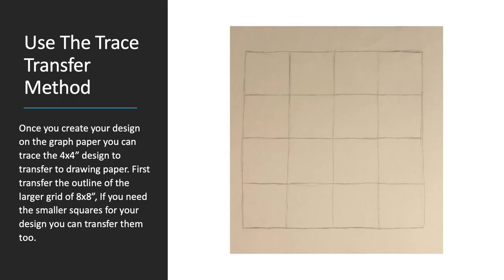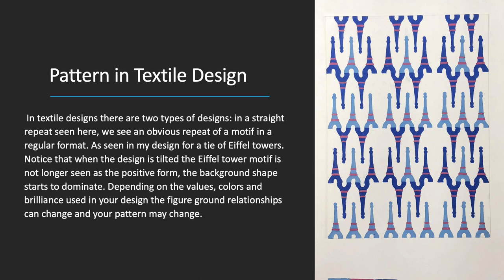Use the trace transfer method. Once you create your design on graph paper you can then trace the 4x4 inch design to transfer it to drawing paper. First transfer the outline of the larger 8x8 inch grid. In textile designs there are two types: a straight repeat, where there is an obvious repeat of a motif in a regular format (as seen in a tie design of Eiffel Towers), and rotated designs. Notice that when the design is rotated, the background shape can start to dominate depending on values, colors, and figure-ground relationships.